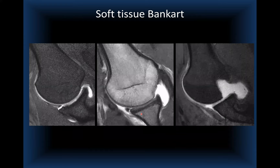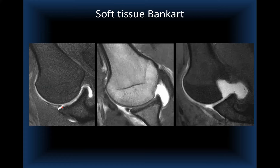Bankart and Bankart variants are well seen in the ABER position — Abduction External Rotation. We perform this on MR arthrography and sometimes on routine MRI when instability history is known. In ABER, tension is placed on the anterior band of the inferior glenohumeral ligament, which lifts the anteroinferior labrum and allows undercutting of fluid or contrast, making the injury easier to see. In this case the labrum is completely detached.